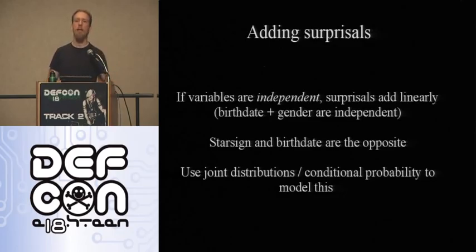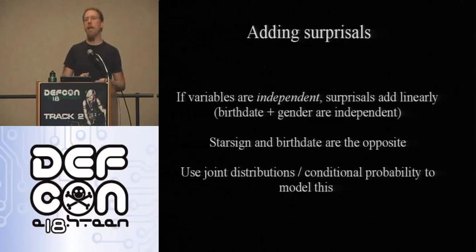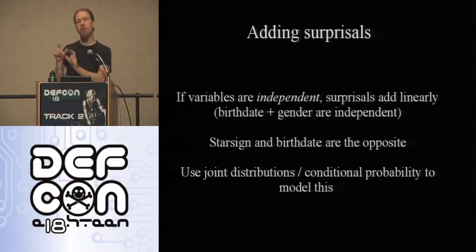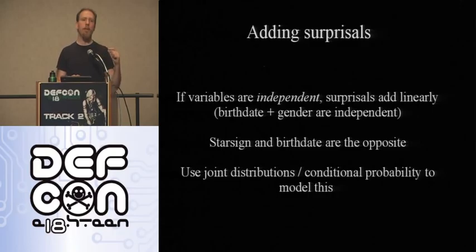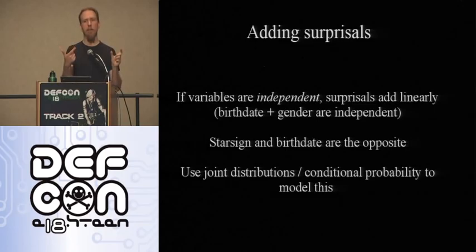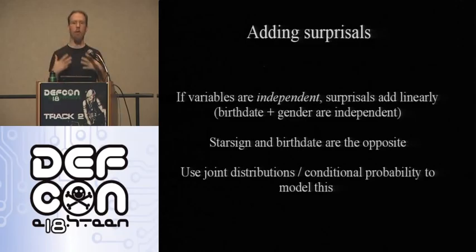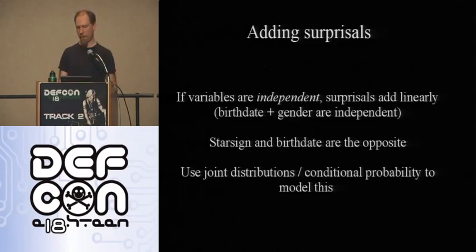An important point is that you can't simply add surprisals together. If you learn someone's birth date and then learn what city they were born in, those two things are probably independent variables, so you could add the bits together. But if you already know someone's birth date and then someone tells you their star sign, you're not going to learn any more information. To know how two measurements add together you need to use conditional probabilities.